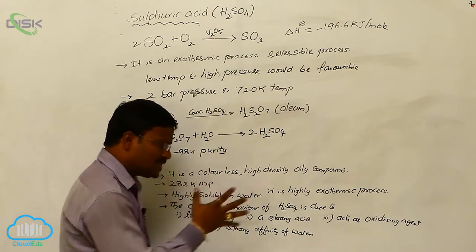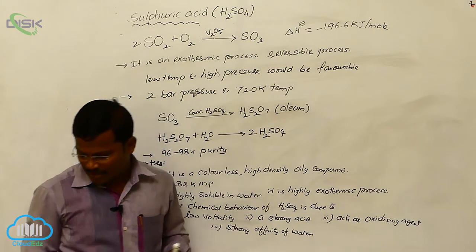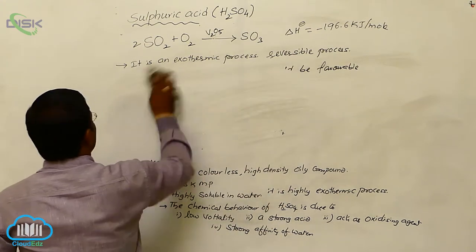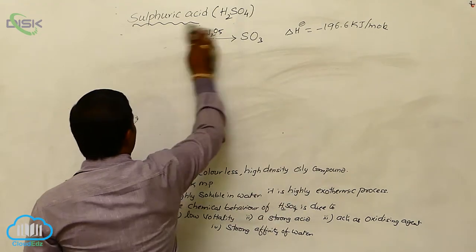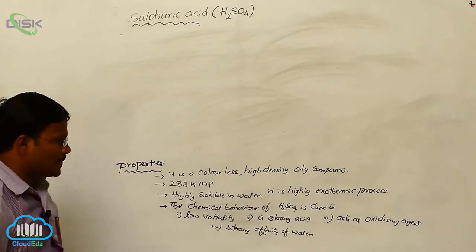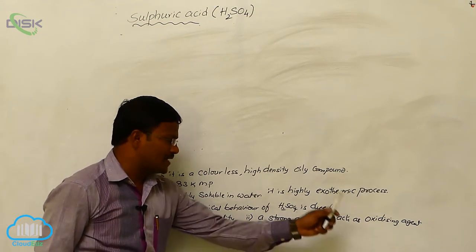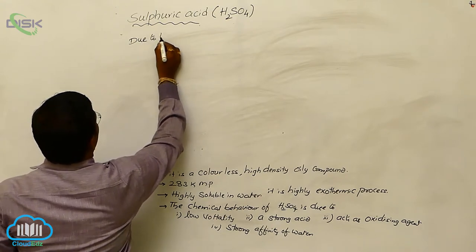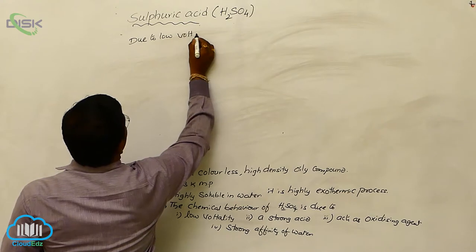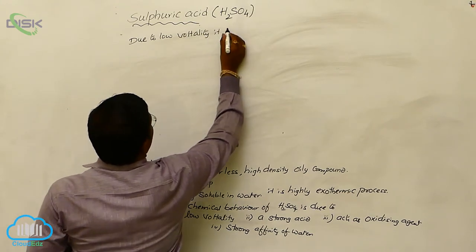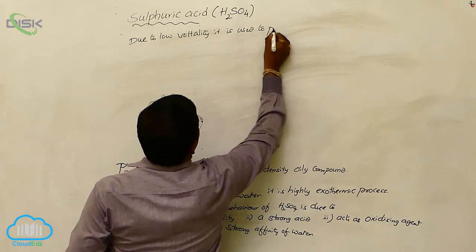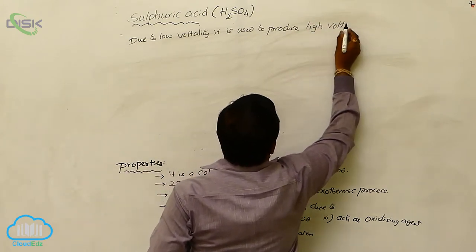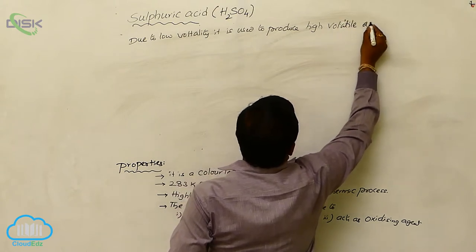Due to these characters, sulfuric acid shows important chemical behaviors. Due to low volatility, sulfuric acid is used to produce highly volatile acids. For example, when metal halides (MX) react with sulfuric acid, they produce high-volatile acids such as hydrogen halides (HX).